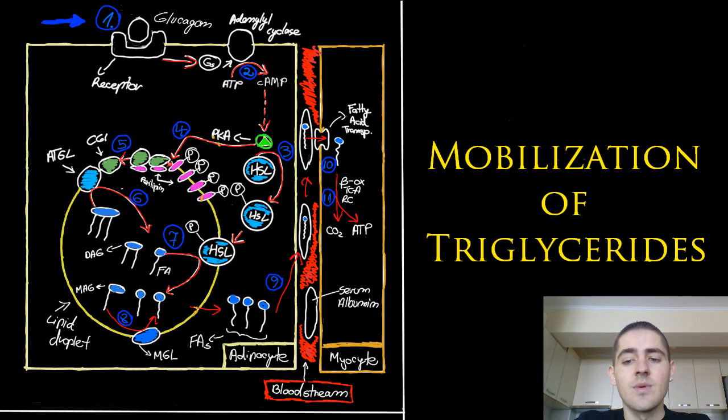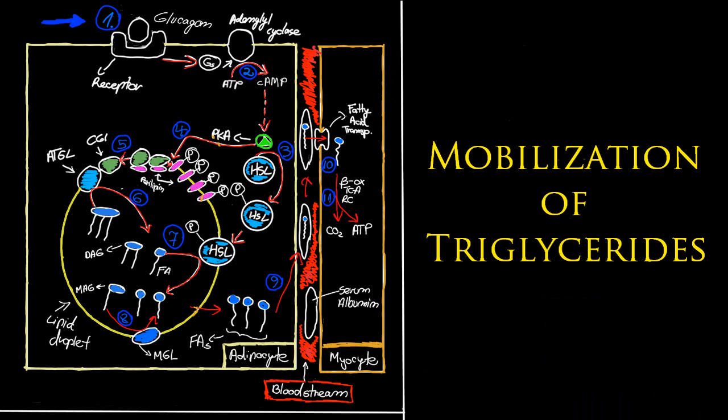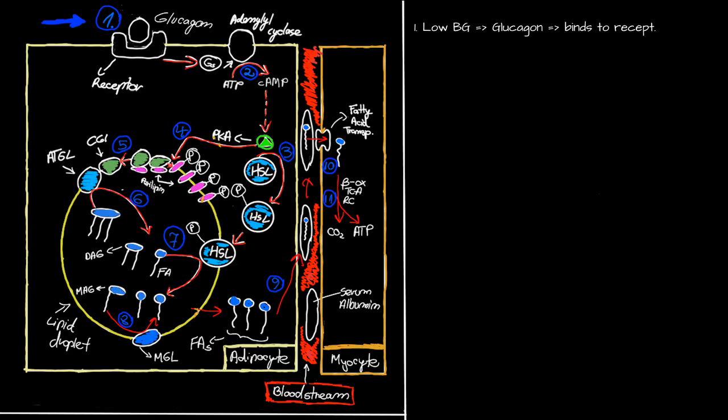So, how does this happen? Well, in conditions of low blood glucose, glucagon is released and it binds its receptor. This is step one.